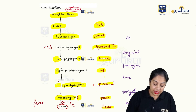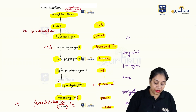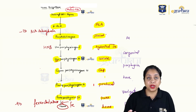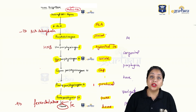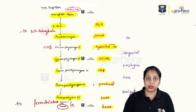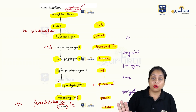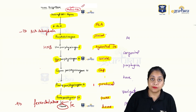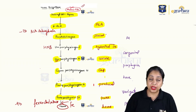Ferrochelatase and ALA dehydratase are both inhibited by lead, so workers in lead factories or those with lead poisoning will have these two enzymes inhibited — a commonly asked exam question. Heme biosynthesis does not take place in mature red blood cells because of the lack of mitochondria. The first step requires the mitochondria, so succinyl CoA and glycine cannot combine without it.